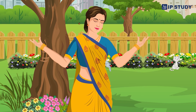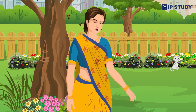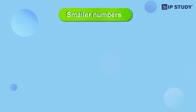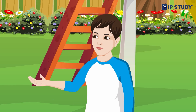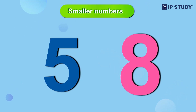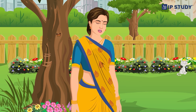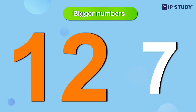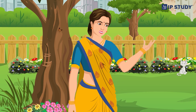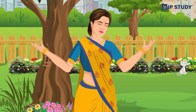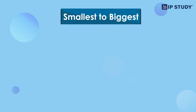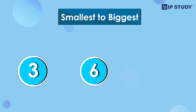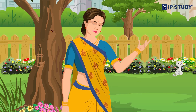Before we leave the park, let's compare some numbers. Which is smaller — five or eight? Oh, I know — five is smaller than eight! Excellent! Now Urvashi, which is bigger — 12 or 7? 12 is bigger than 7, mom! Great job! What comes first when we count from smallest to biggest — three, nine, or six? It's three, then six, then nine!